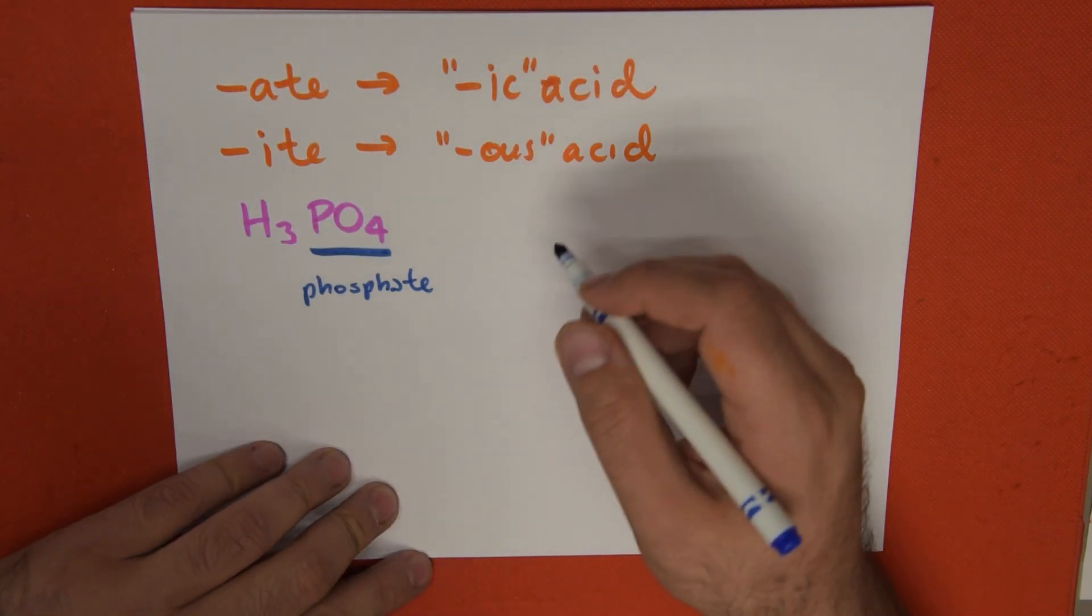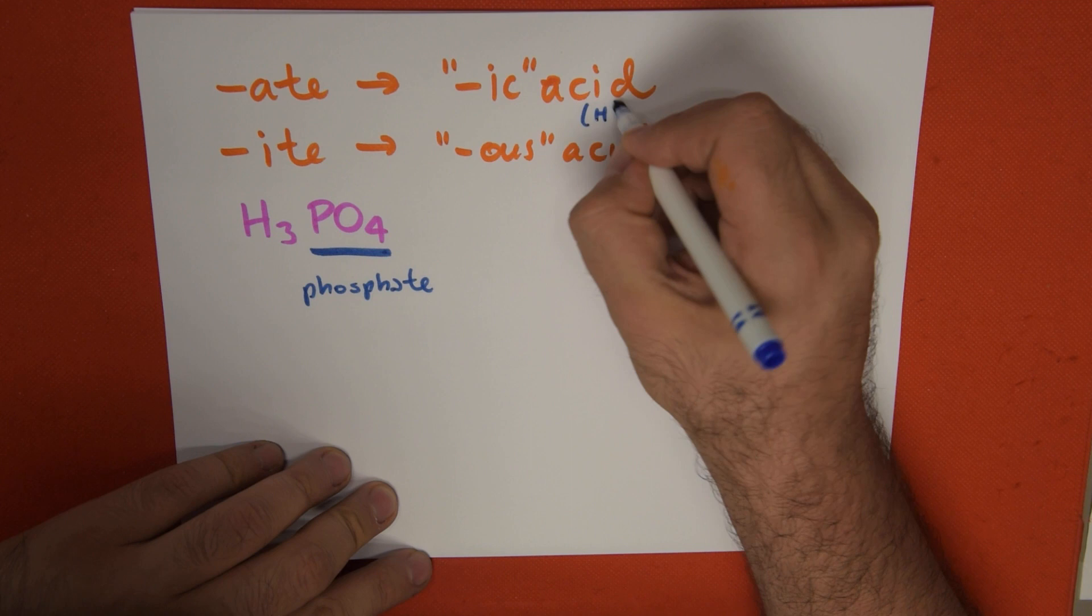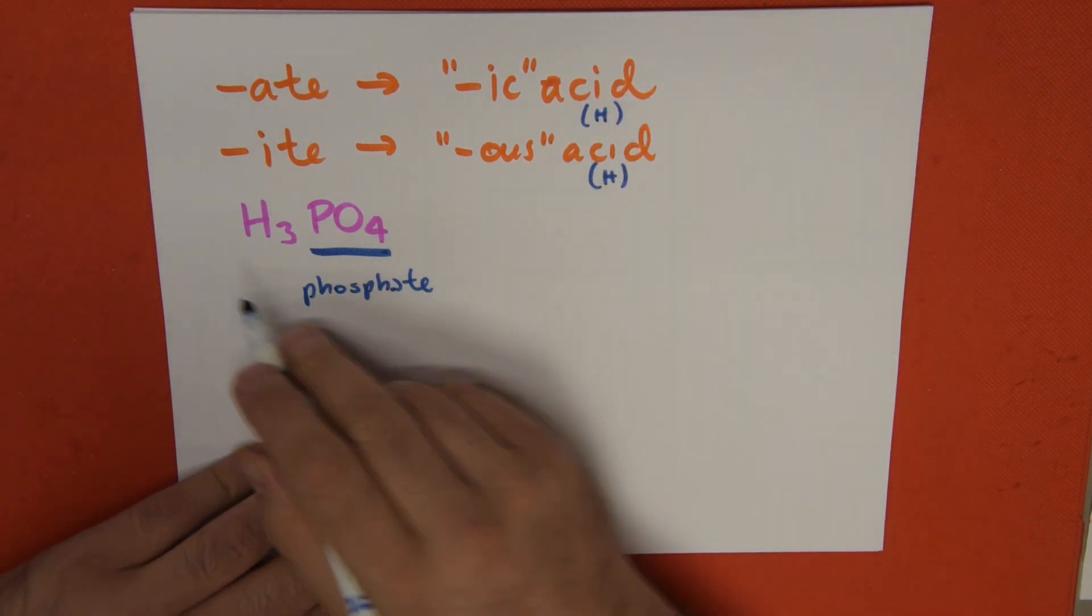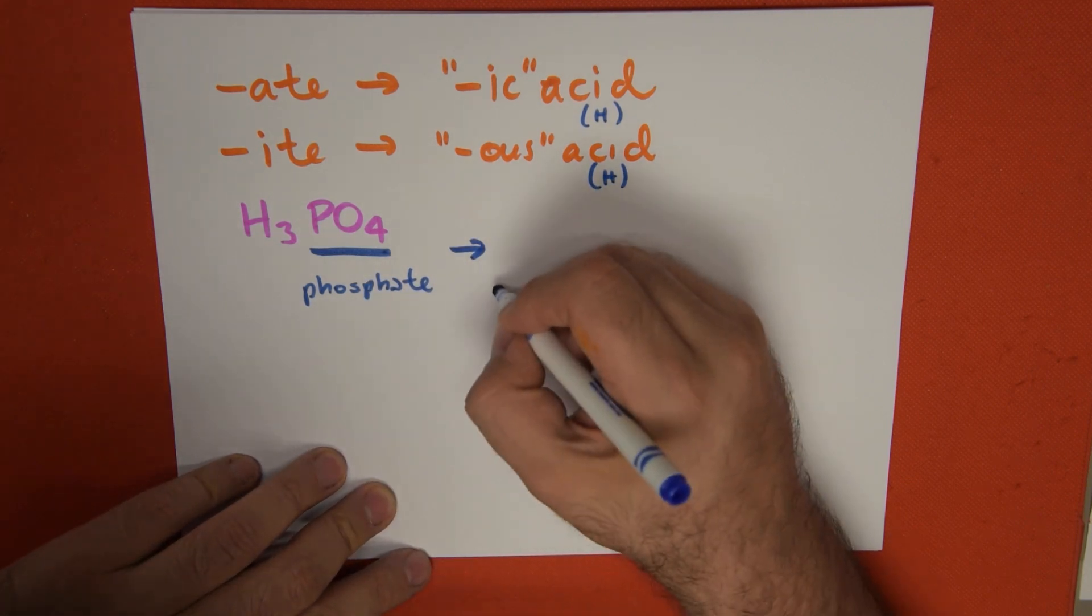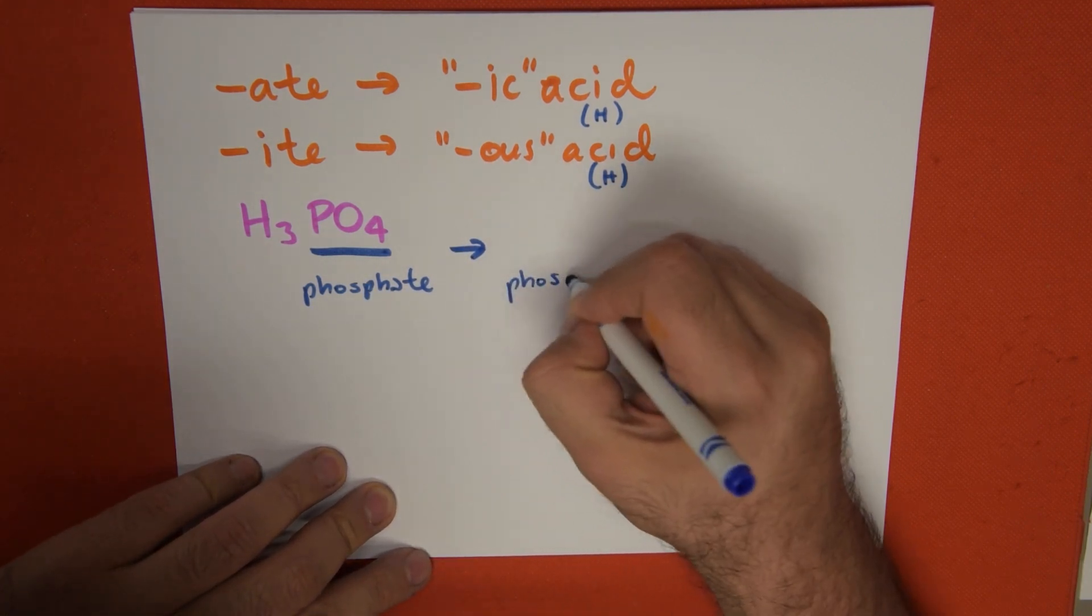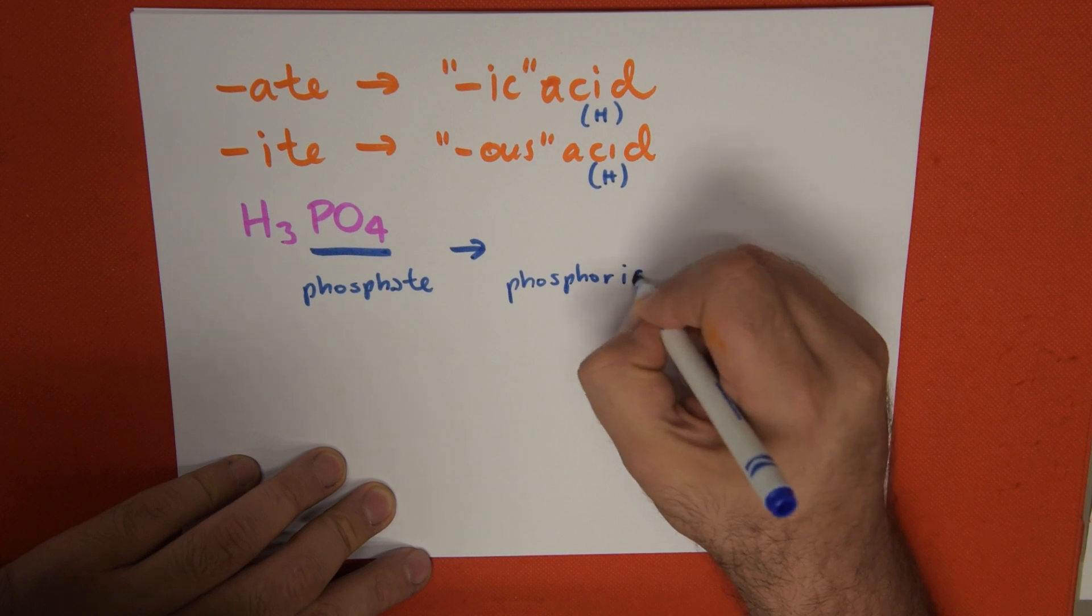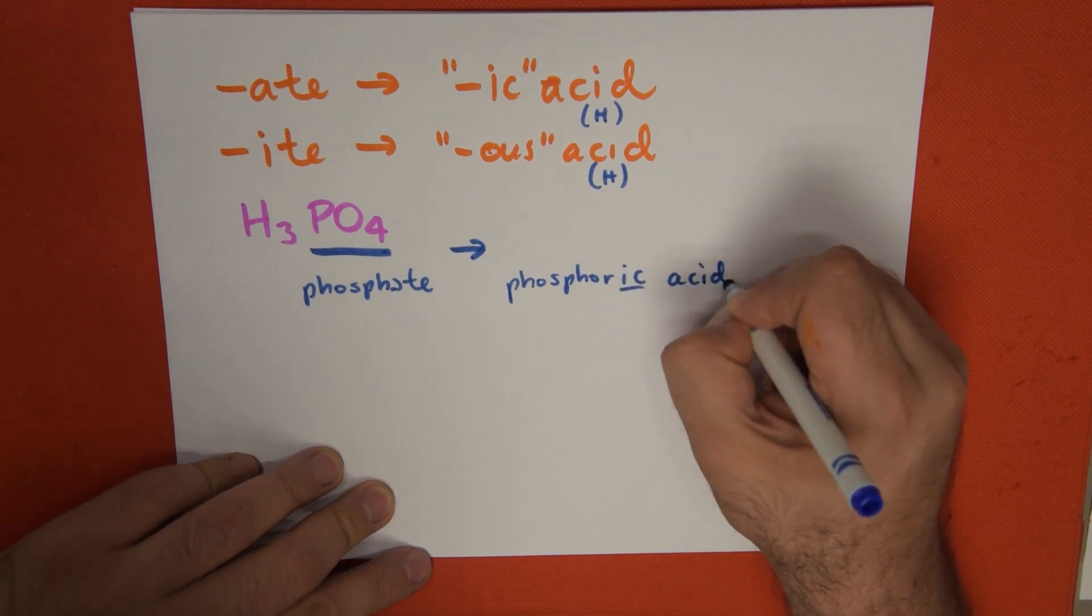In this case, acid is really what's representing the letter H from the cation. So we don't worry about it anymore. Phosphate is going to turn into phosphoric acid, which is that -ic ending.